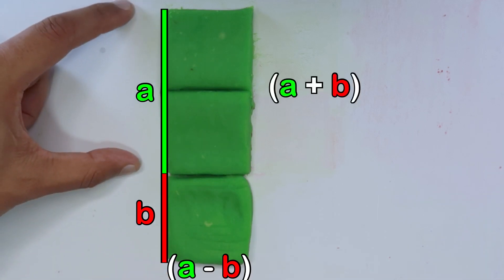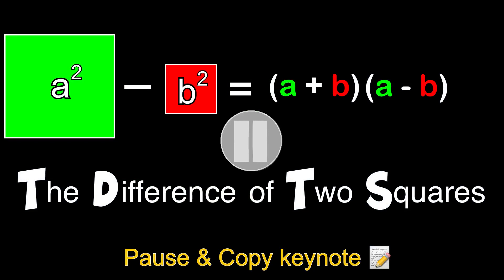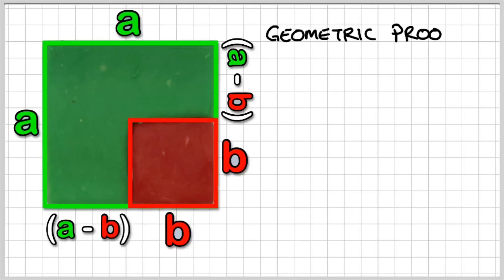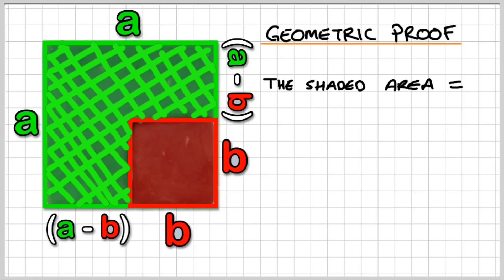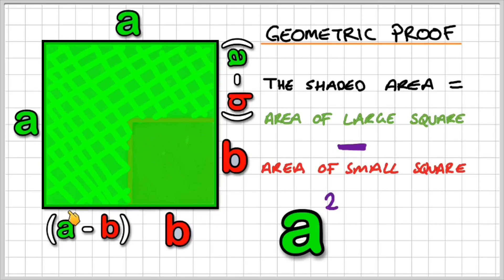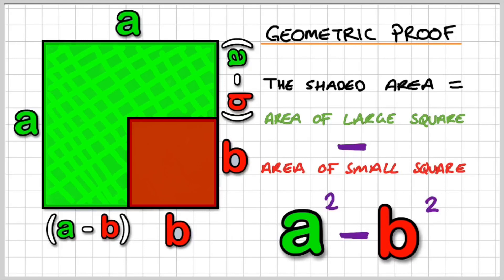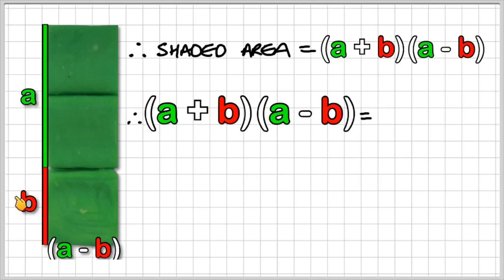This geometric proof shows that A plus B times A minus B is the difference of two squares. From the geometric proof, we saw that the shaded area was equal to the area of the larger square minus the area of the small square. In other words, we have A squared — which is the large square, A times A — minus the small square, which is B squared, B times B. Therefore, we can say A plus B multiplied by A minus B is equal to the difference of two squares.